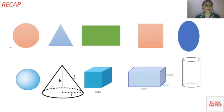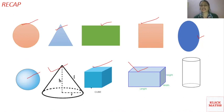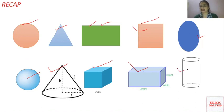Now let's recap: circle, triangle, rectangle, square, oval, sphere — remember the difference between a circle and a sphere. Cone, cube, and cuboid — all sides of a cube are equal, but in a cuboid not all sides are equal, just like in a rectangle. And the last shape is a cylinder.